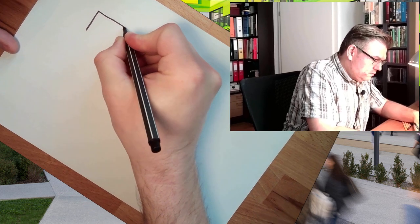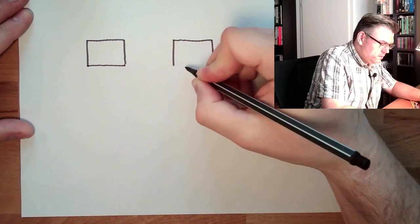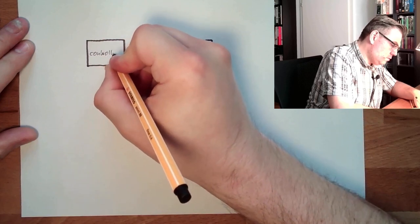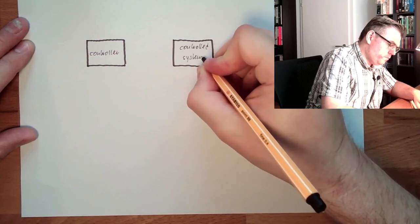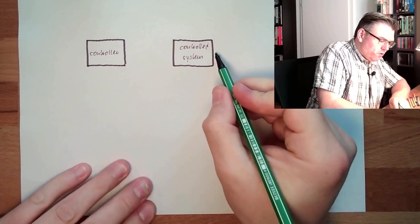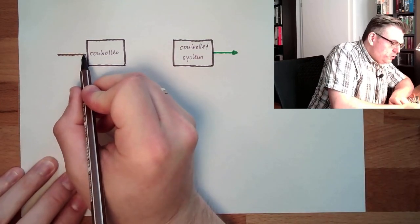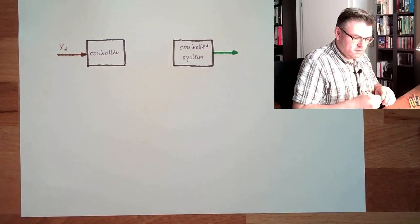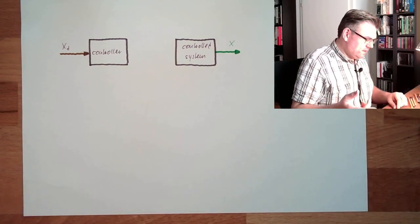Let's have a look at our system. Here we have the controller, and here we have the system. The output of the control system is our control variable. The input to the controller is our control deviation, our xd. And the output of the controller is the correcting variable.